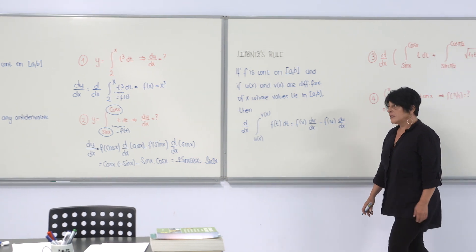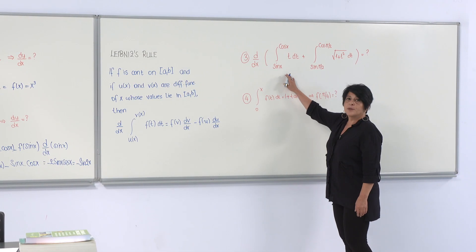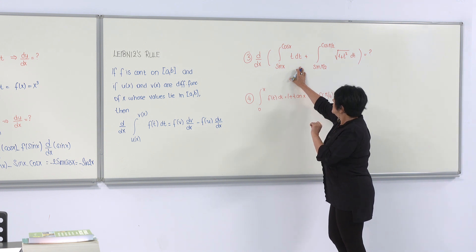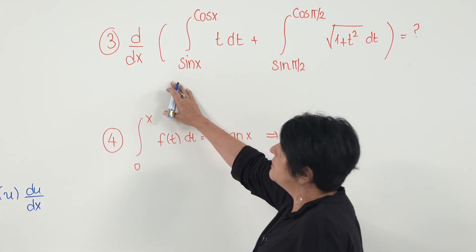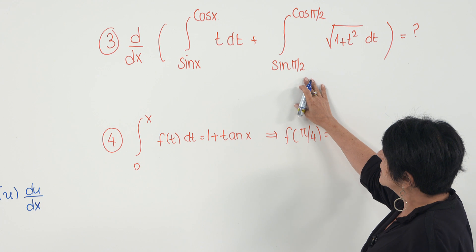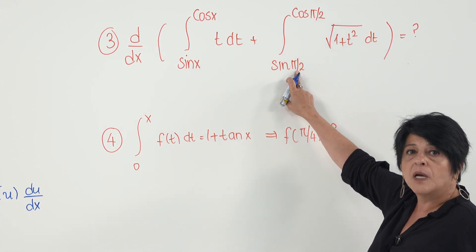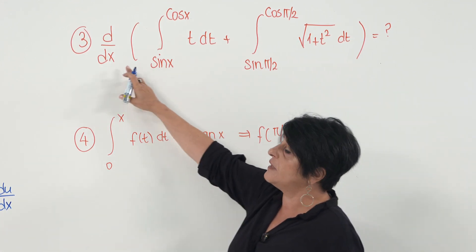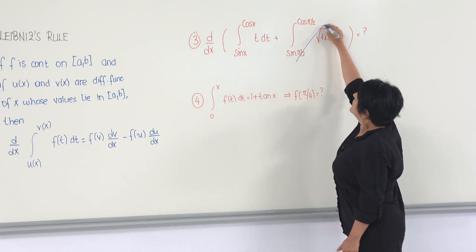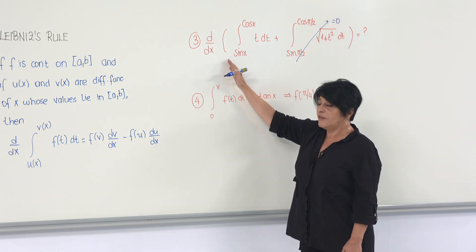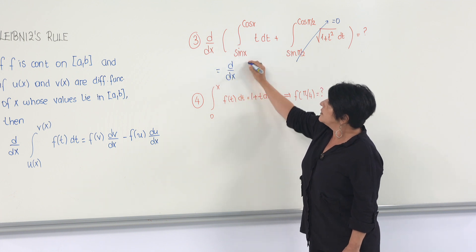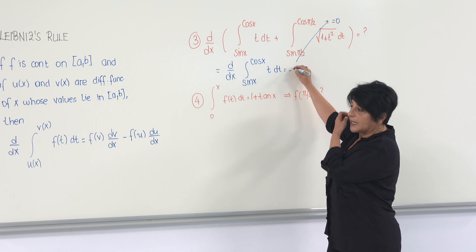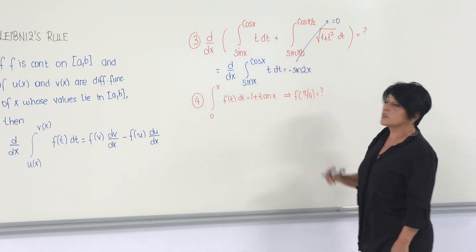For the third example, the first part is like example 2, but there is an additional integral. They ask for the derivative of a sum. Notice that the second integral has constant limits, so its value is a constant, and when you take its derivative with respect to x the result is 0. Therefore, the derivative equals only the derivative of the integral from sin(x) to cos(x) of t dt, which we already calculated as −sin(2x).